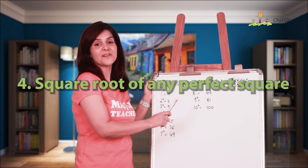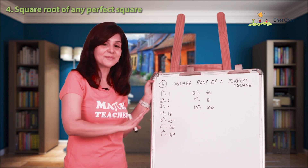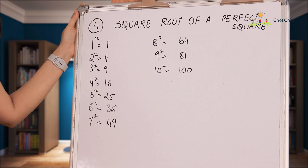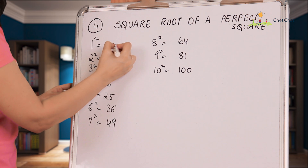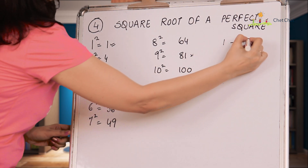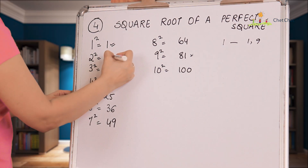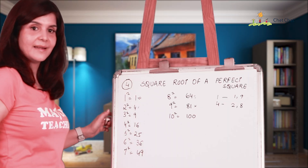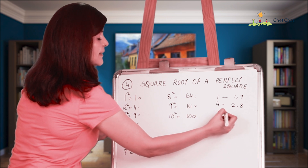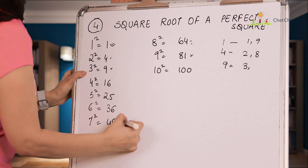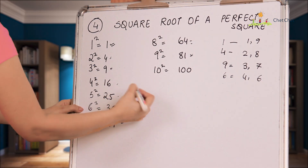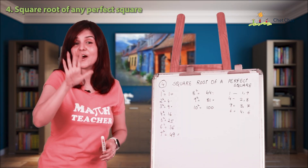Trick number four is to find the square root of a perfect square. First, let me show you a pattern. I've written the squares of the first 10 numbers. Look at the units digits: a units digit of 1 means the square root ends in 1 or 9; a 4 means 2 or 8; a 9 means 3 or 7; a 6 means 4 or 6; a 5 always means 5; and a 0 always means 0.